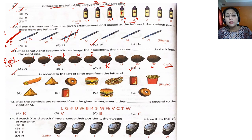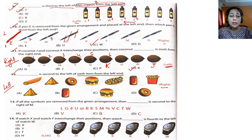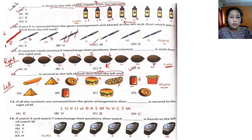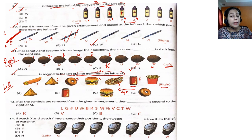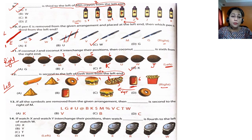Question 12: dash is second to the left of the sixth item from the left end. Break it into pieces and read from the back. Sixth item from the left: one, two, three, four, five, six — that's a can. Second to the left of can — do not count can itself: one, two — that is burger. The answer is C, which is burger.